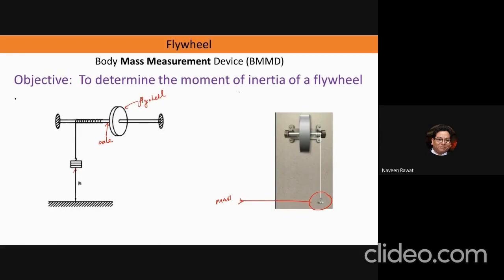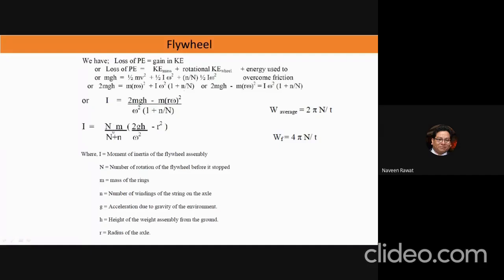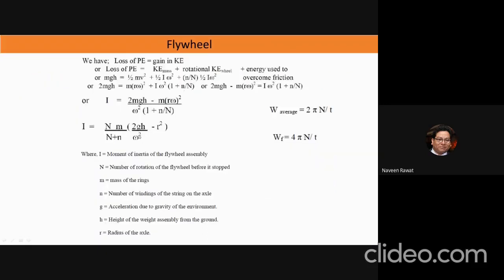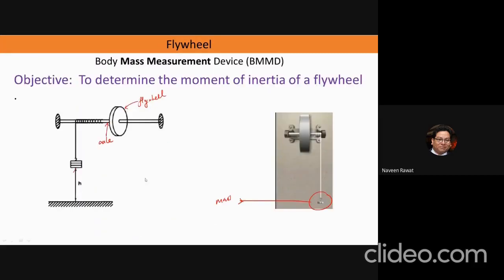The moment of inertia is related to your concept of inertial mass. For linear or translational motion we have inertia as resistance to motion; for rotational motion there is resistance to rotational motion, and that is what the moment of inertia tells you. The variables are: n — the number of rotations of the flywheel; m — the hanging mass; g — gravitational constant; h — the height from which you drop the mass; r — the radius of the axle; and omega — the angular velocity, found from 4πn/t. Little n is the number of windings of the string on the axle.